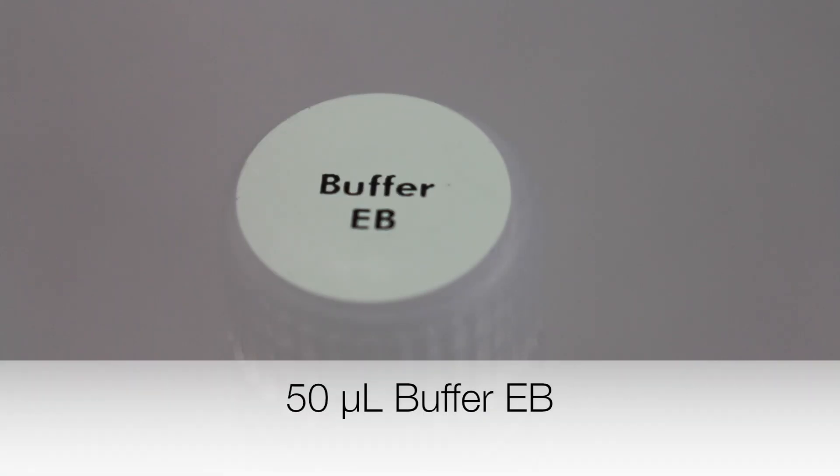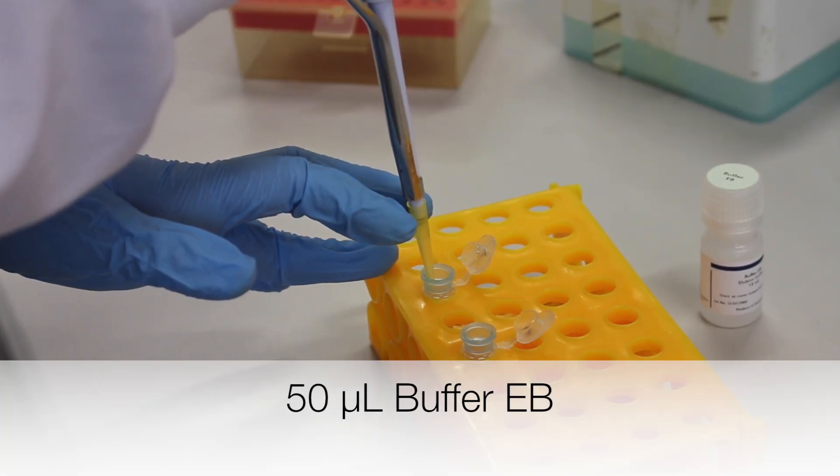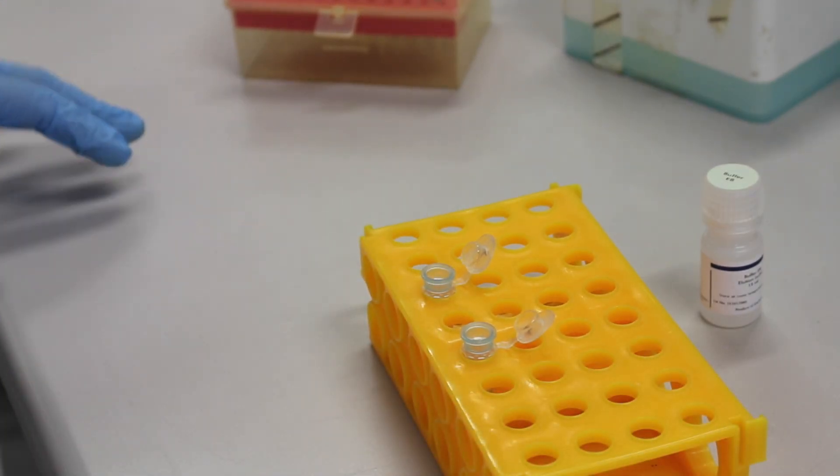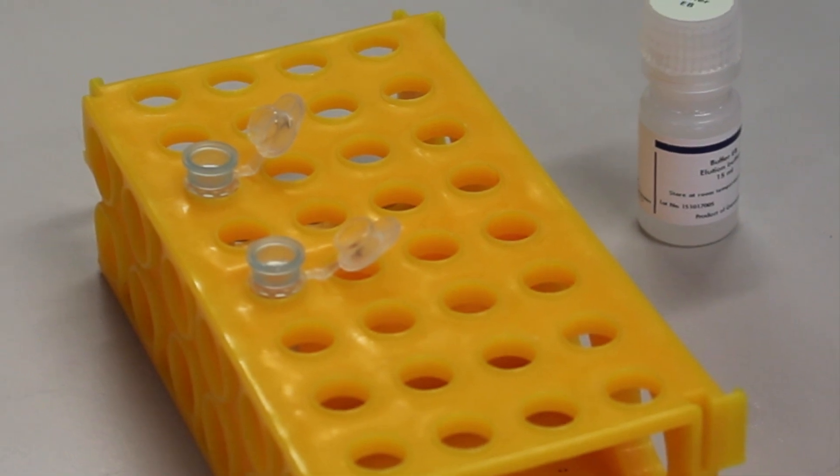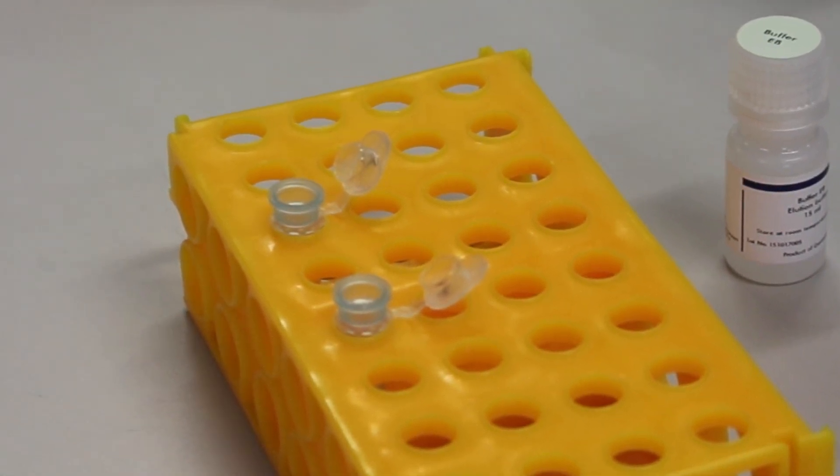50 microliters of buffer EB is added to the center of each column. This buffer elutes the plasmid DNA. The columns are left to stand at room temperature for 5 minutes.